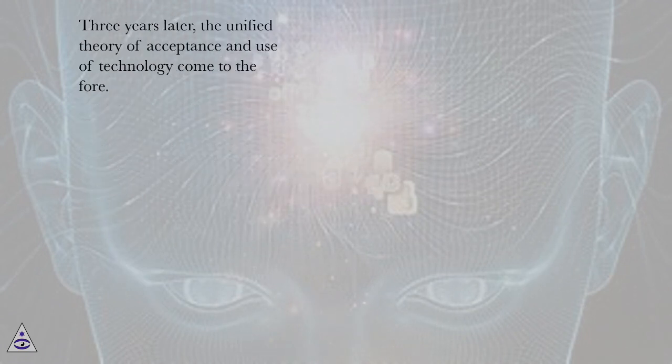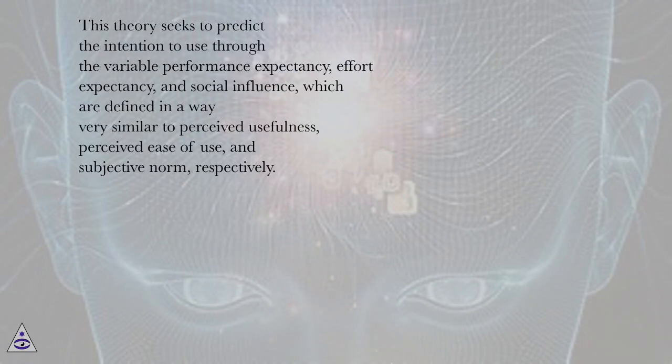Three years later, the unified theory of acceptance and use of technology came to the fore. This theory seeks to predict the intention to use through the variables performance expectancy, effort expectancy, and social influence, which are defined in a way very similar to perceived usefulness, perceived ease of use, and subjective norm, respectively.